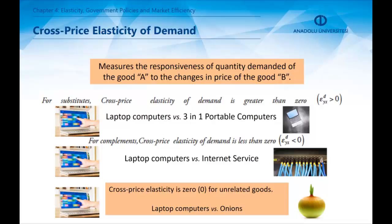However, there are goods with no relation at all. For unrelated goods, like laptop and onion, the cross price elasticity is zero.